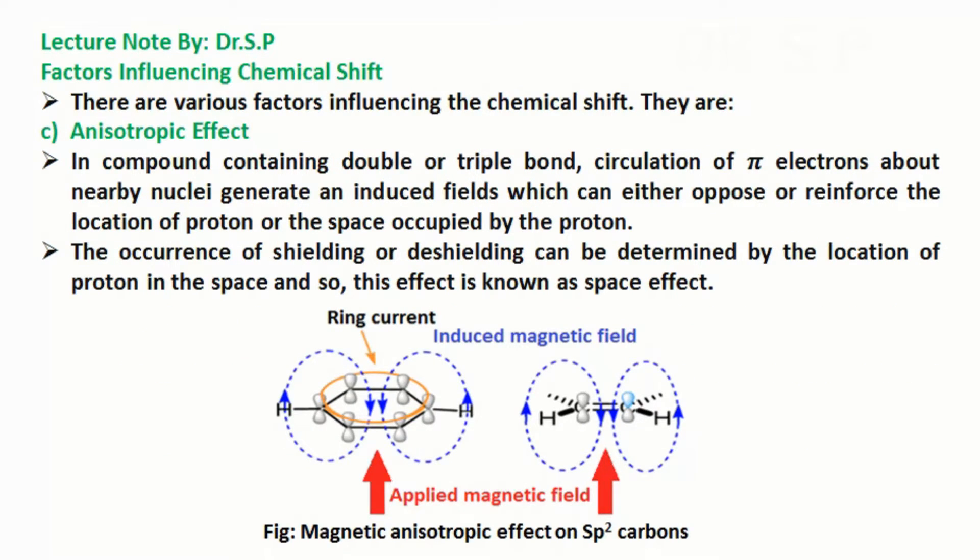c) Anisotropic Effect: In compound containing double or triple bond, circulation of π electrons about nearby nuclei generate an induced fields which can either oppose or reinforce the location of proton or the space occupied by the proton. The occurrence of shielding or deshielding can be determined by the location of proton in the space and so, this effect is known as space effect.